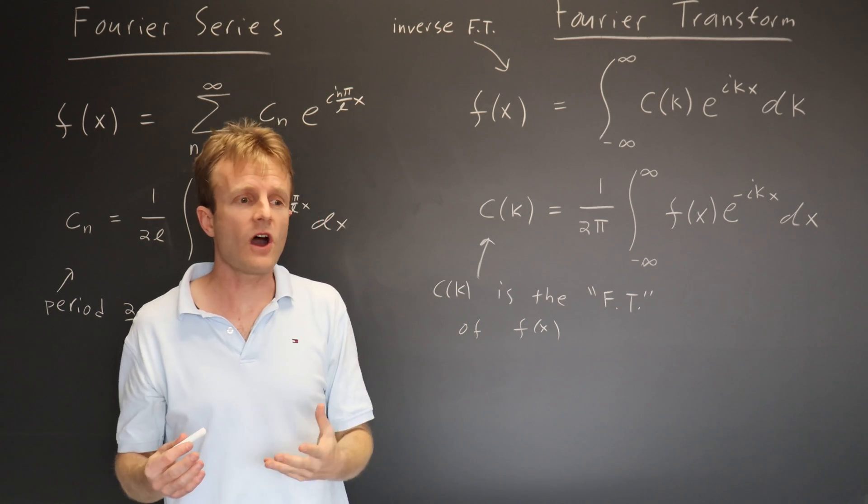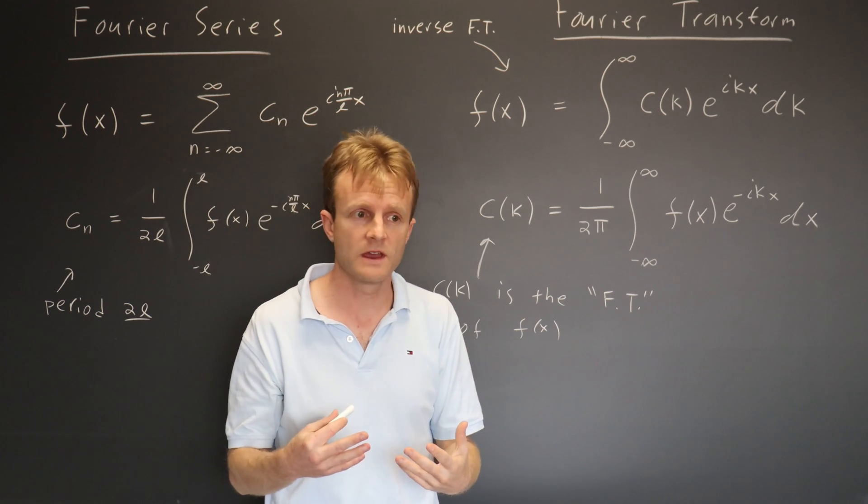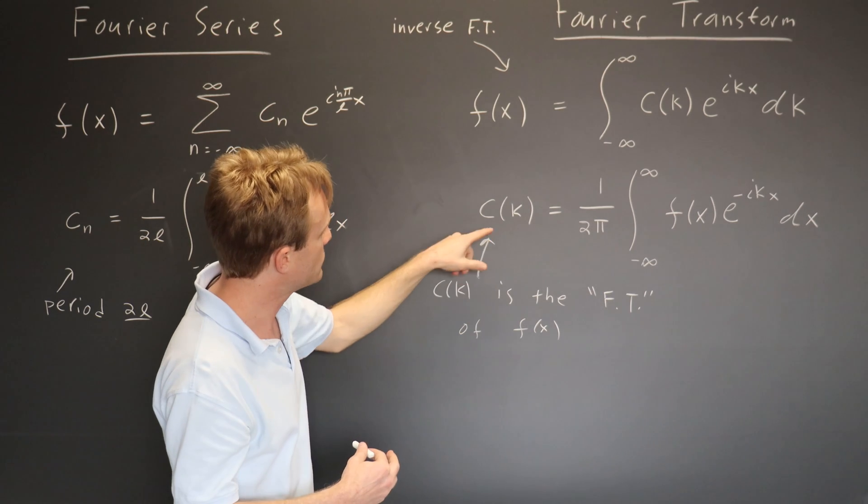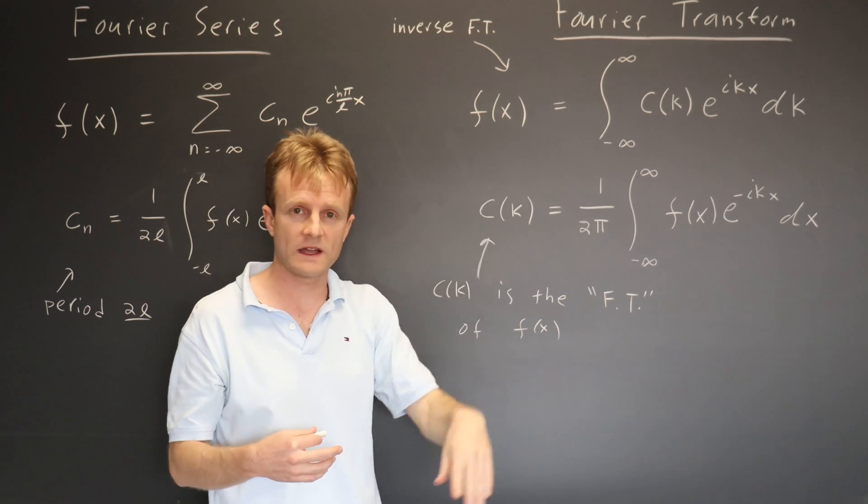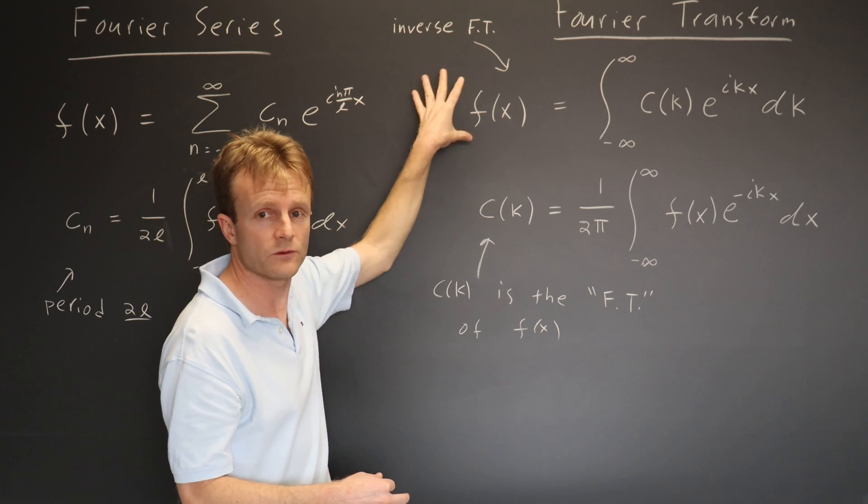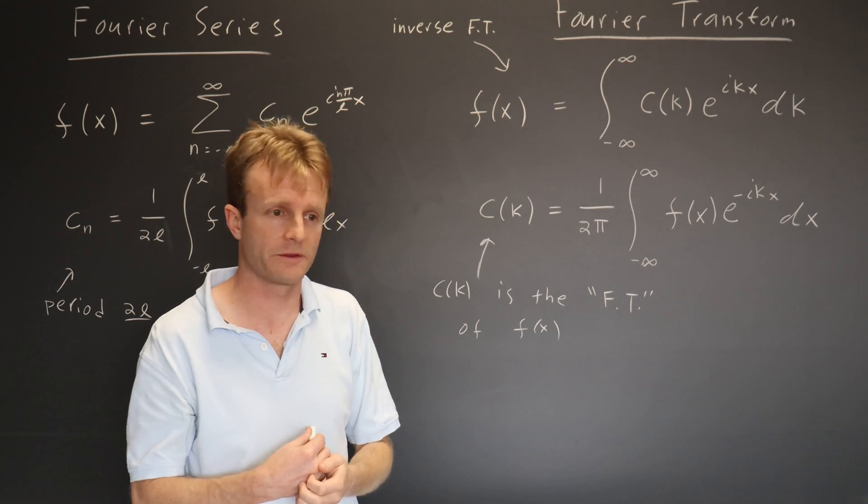And then you realize, it's the 60 hertz is the frequency of oscillation in alternating current. And so that's just some noise that I don't want in my signal. And so you just make a new c of k, you subtract out that noise, you invert Fourier transform, and now you have a reduced noise function f of x that has more of the data you're interested in.